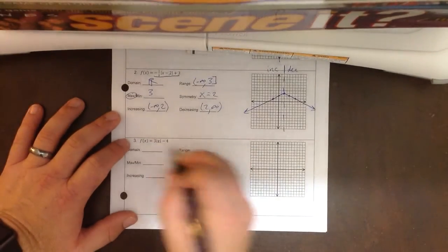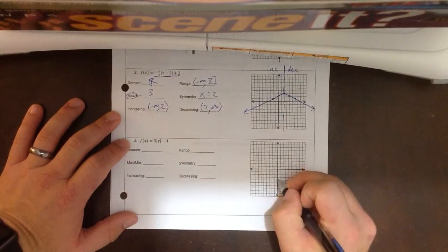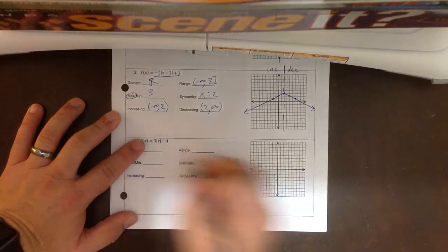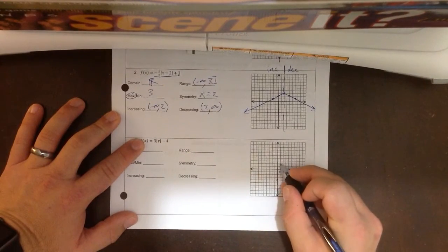Alright, number 3. No left or right, just down 4. My slope is 3, so 1, 2, 3, 1.